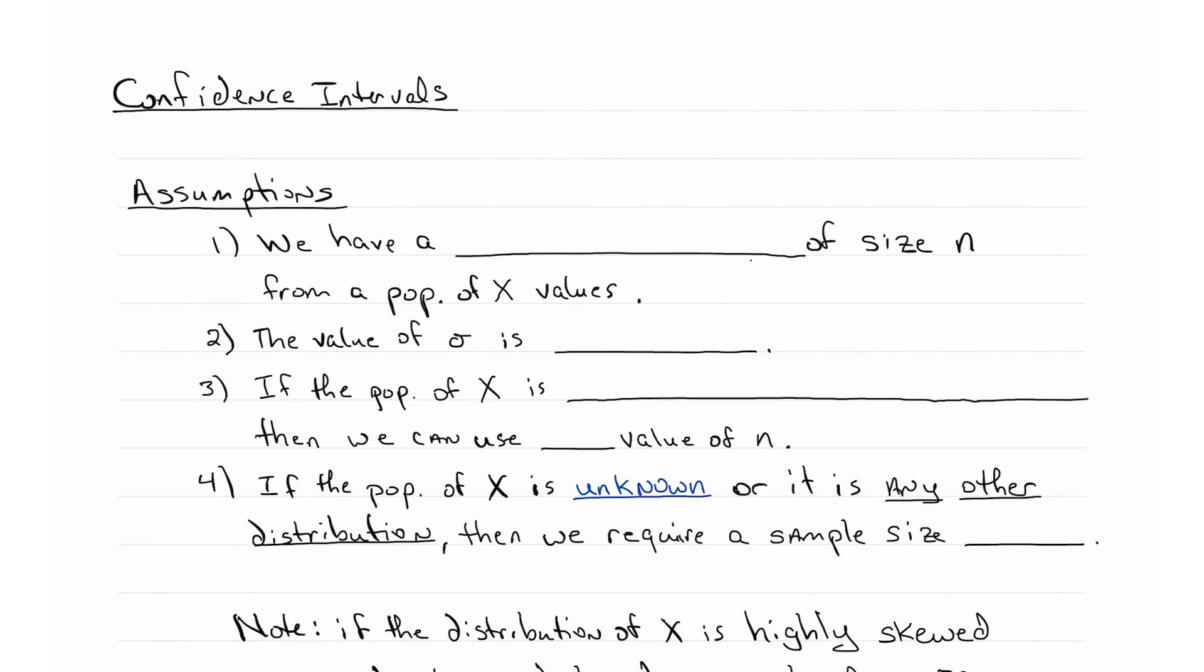In this video, we're going to review some characteristics of a confidence interval, and then do another example. So we have some assumptions. The first assumption that must be met is that we have a simple random sample of size n from a population of x values.